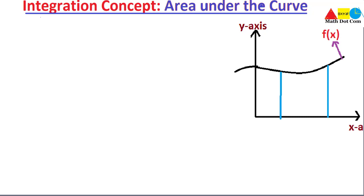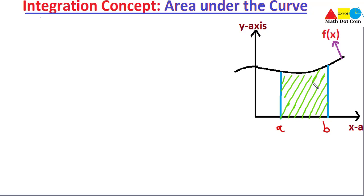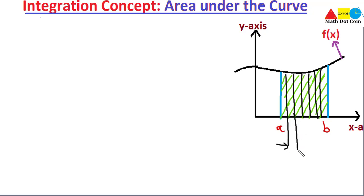If we are given limits — this is 'a' and this is 'b' — and you are asked to find the area under the curve between points a and b, how will you find the area of this portion? We can divide this portion into rectangular pieces: first, second, third, fourth, fifth, sixth, seventh. The width of these rectangular pieces is labeled as Delta X.